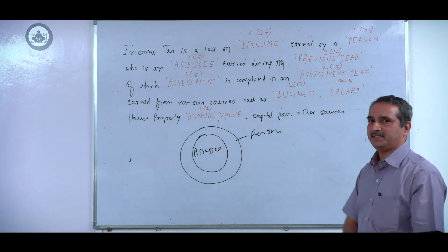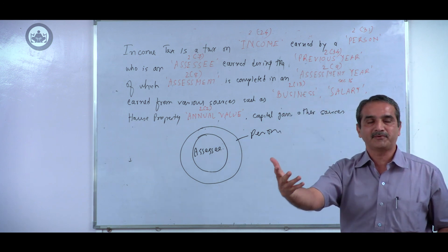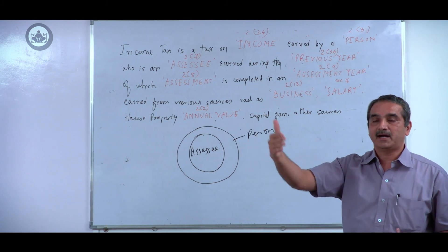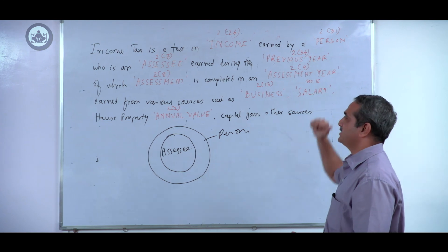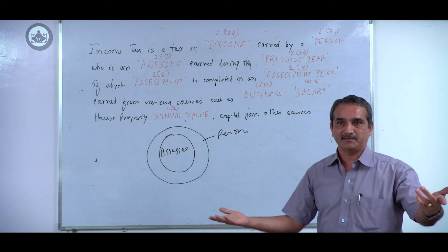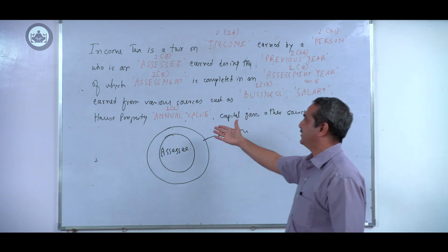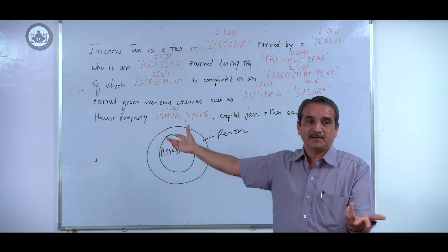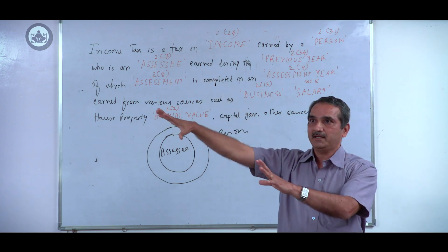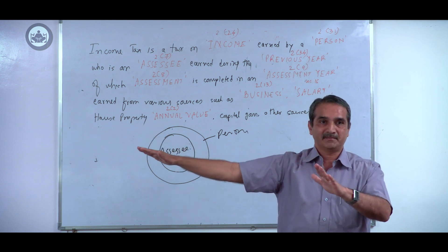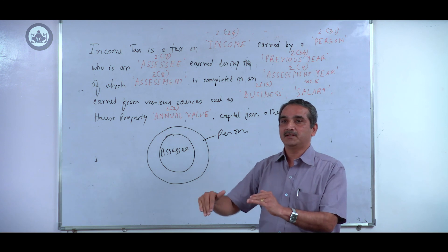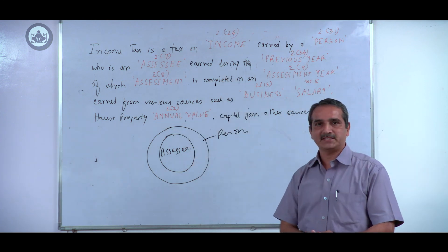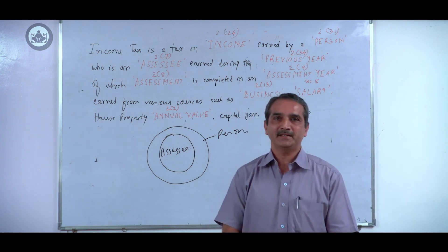The sources of income are divided into various heads such as business, salary, and house property. What constitutes business — whether a particular activity qualifies — determines which deductions are available and under what head it is taxed. For salary, whether an employer's gift to an employee qualifies as salary will be decided under that head. For house property, the concept of annual value means you may have taxable income even if you've received nothing from the property. All these concepts will be studied in detail when we cover the definitions.